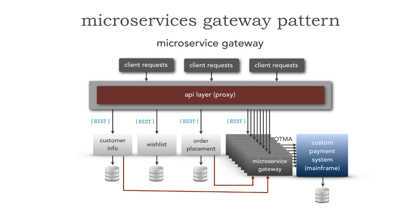Now we've actually seen three different kinds of microservices that we can use within the ecosystem: we've seen orchestrators, we've seen aggregators, and now we've seen gateways. These are three specialized kinds of microservices that handle this adapter or integration kind of approach, as opposed to a functional microservice.